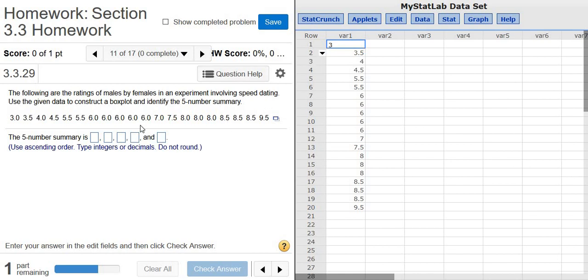In this problem, we're given a bunch of data, and we're asked to find the five-number summary and also to create a box plot.